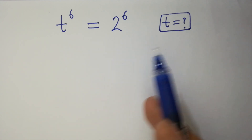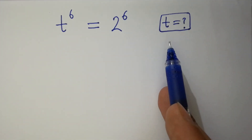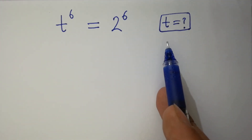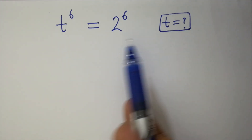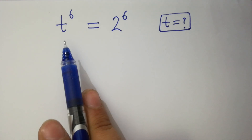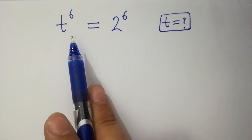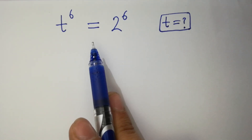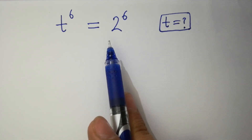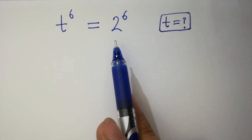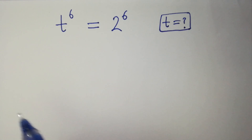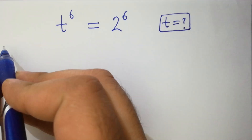Hello friends. Find the value of t if t to the power 6 equals 2 to the power 6. Let's have a solution.